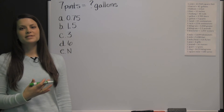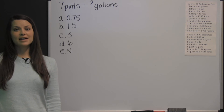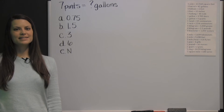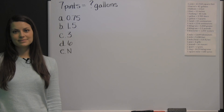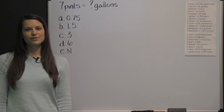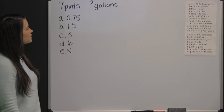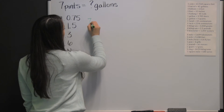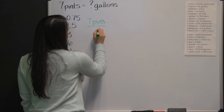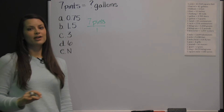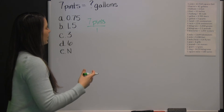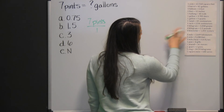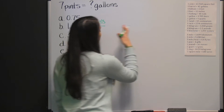This problem is from the mathematical usage section of a CAST practice exam. The mathematical usage section of the CAST exam is over conversions, and you'll have a conversion chart like the one shown here. For this conversion, we're converting from pints to gallons. We start with 7 pints. We want to look at our conversion chart and find conversions for pints and gallons.